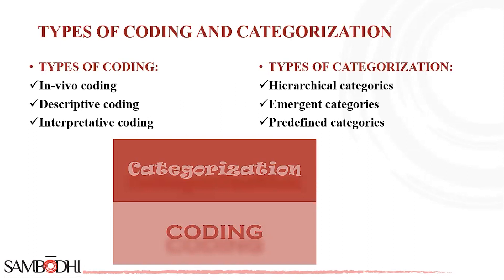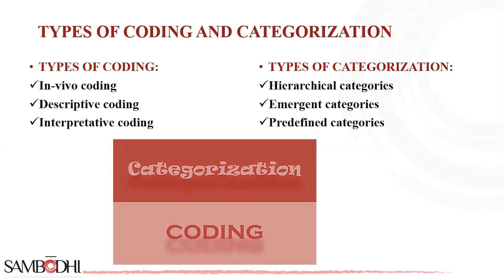The first type of coding is in vivo coding, which involves using participants' own words as codes to preserve the authenticity of their expressions. In vivo coding is a first cycle coding method in qualitative analysis. You derive codes from the data itself, utilizing language and terminology used by the participants rather than researcher-derived terms. This allows codes to reflect the perspective and actions of the participants.